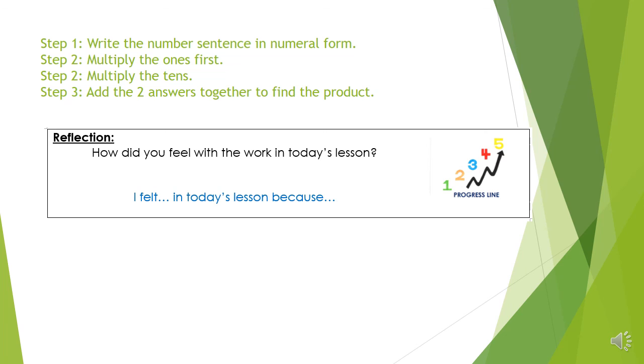Once you have done all your maths work today, have a little reflection of how you feel you got on with today's work on the progress line. Do you feel that you're a one, so you really didn't understand this and you might need some support? Or do you think you're a five, that you understand this really well and could coach other people? Or maybe you're somewhere in between. Have a think about where you think you are on the progress line today and write this little reflection in your book.